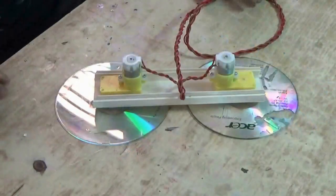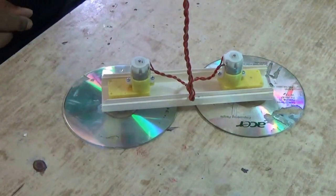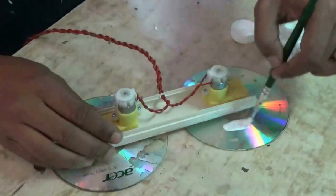Solder two wires with each motor. The wires are 2 meters long. Then paint the CD to make it look better.